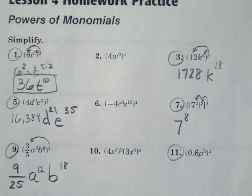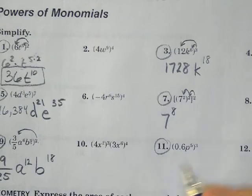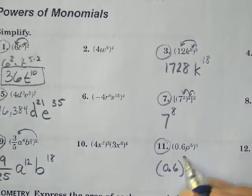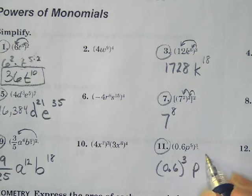Number 11, same idea. I'm going to do 0.6, 0.6, and I'm going to do the cubed value of that, and then P becomes 5 times 3 for 15.